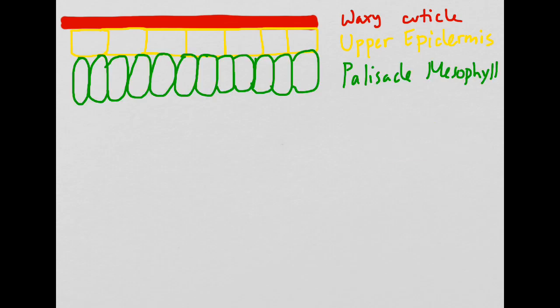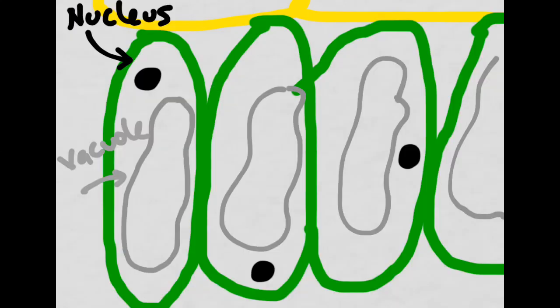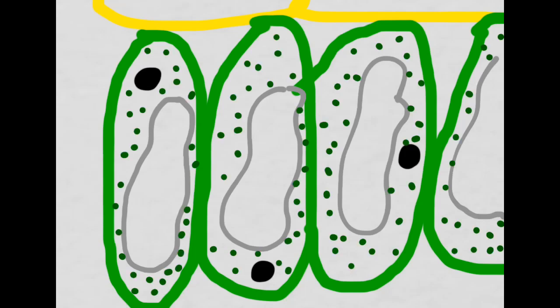The third layer moving down from the top is called the palisade mesophyll. If we were to look very closely at the cells of the palisade mesophyll, we would notice that each of them has a nucleus and also has a very large vacuole for water storage. However, arguably the most important thing about the palisade mesophyll layer is the fact that these cells are full of chloroplasts.